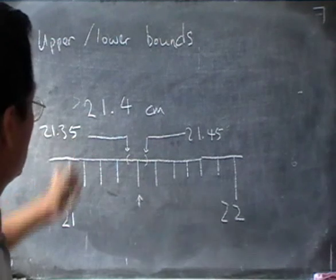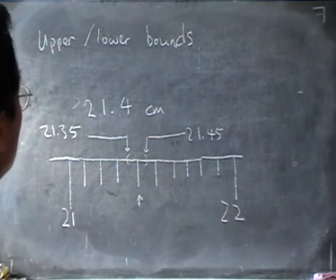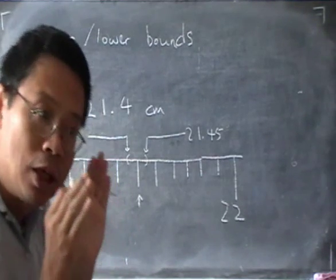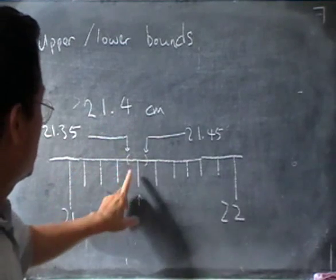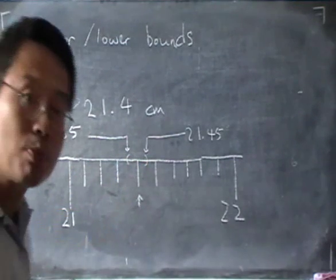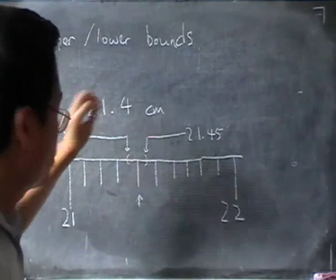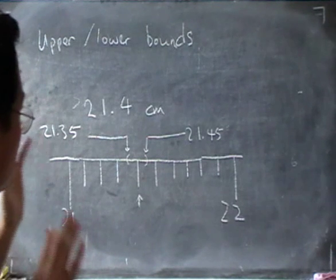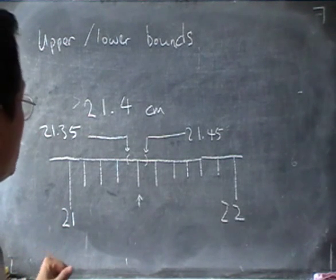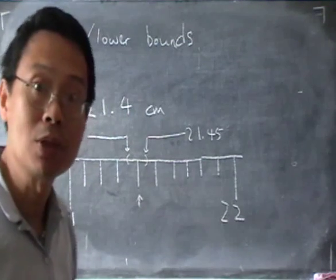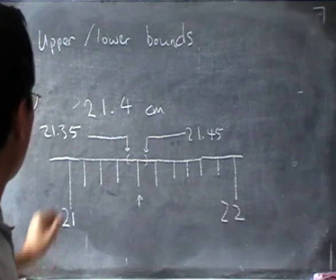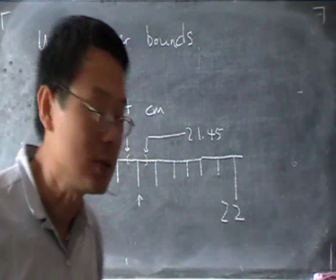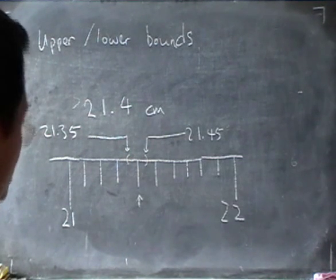So this gives me an idea of what the upper, what is the, how accurate this thing is, what is the range of possible value, the length of this book really is. So with this understanding, that means I know that actually the book may not be exactly 21.4 centimeters long. It must be somewhere between 21.35 and 21.45 centimeters.